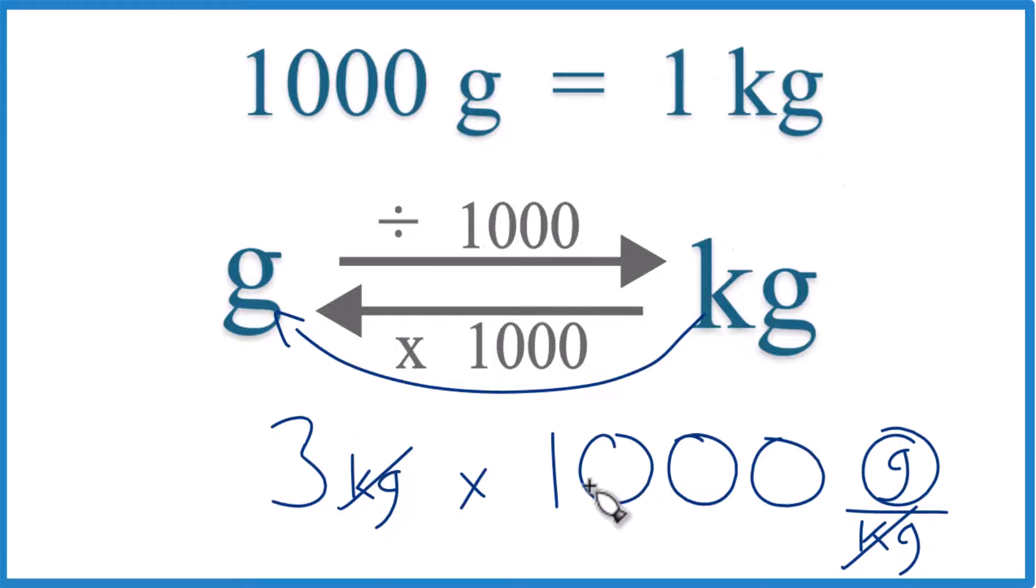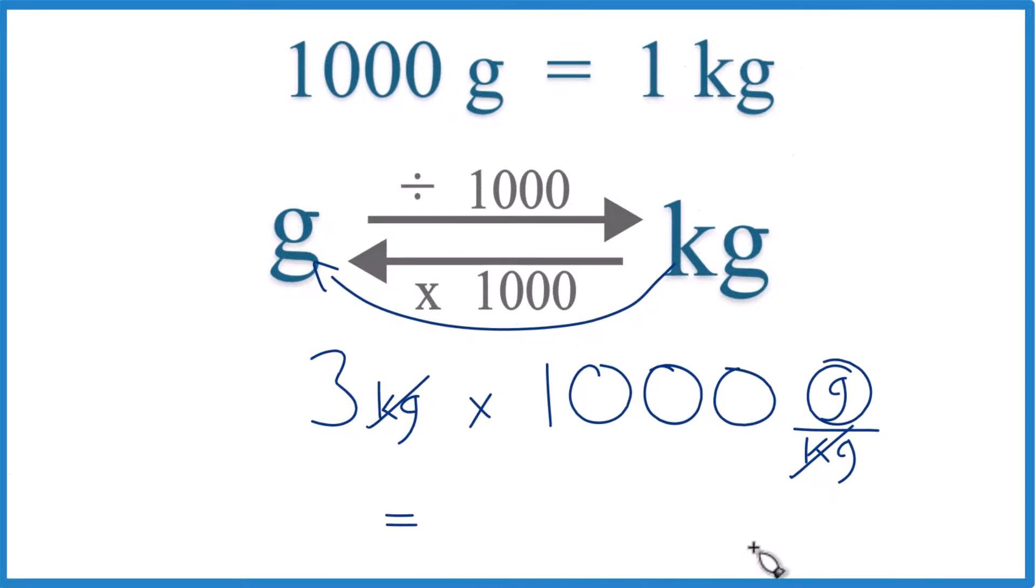So we take 3 times 1,000 grams, that gives us 3,000 grams. So in answer to our question, 3 kilograms, that equals 3,000 grams.